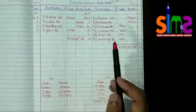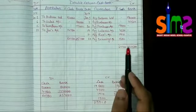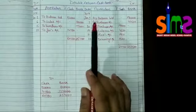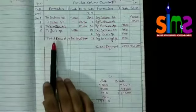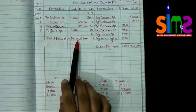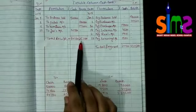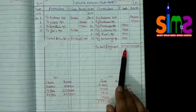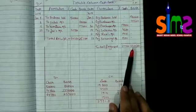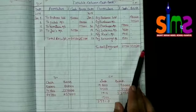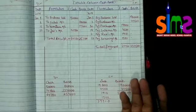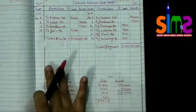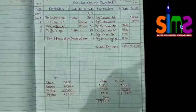Now I am going to tell you how this entry will be created in the cash book. First of all, we have to make the total of both sides of the cash column and the bank column. The total receipt in cash is 64,780 and the total receipt through bank is rupees 2,57,000. The total payment by cash is 27,710 and the total payment through bank is 2,37,500.